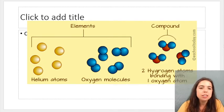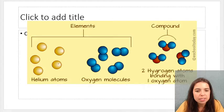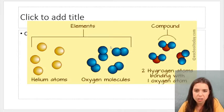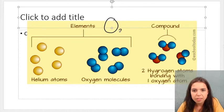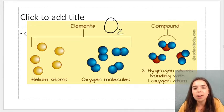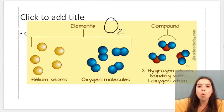So here we go. These are atoms, these are elements, helium atoms, oxygen molecules, we call oxygen, that is O2. That is a diatomic element. Okay. And compounds, when we have two or more different types of elements combining together.